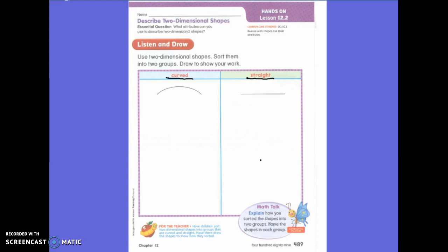Great job! Who can describe a curved side? A circle. Okay, a circle is a curved side. What makes it curved? Because it has no straight sides. Okay, so it's more rounded. Good job.